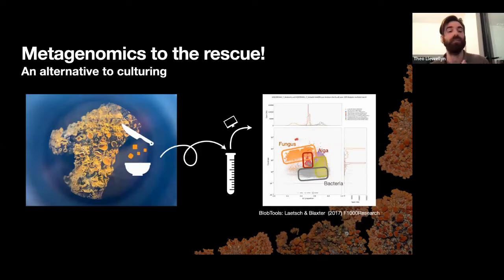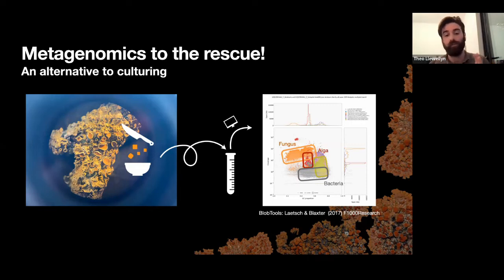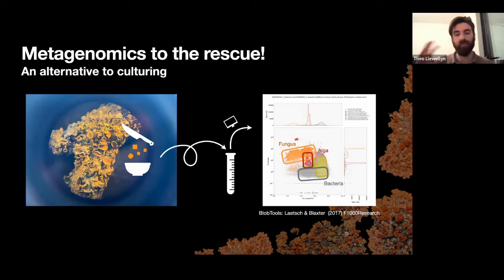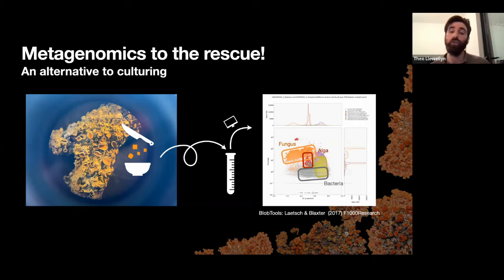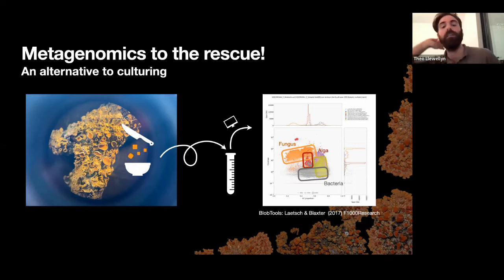That's where metagenomics comes in. This allows you to sequence basically everything — you scrape the whole lichen off, grind it up, do your DNA extraction, and then use bioinformatics to separate the different organisms. Without going deep into the bioinformatic pipeline, you can use characteristics of the DNA sequences themselves to separate genomes. One very useful character is the GC content — the proportion of guanines and cytosines to adenines and thymines. Different organisms tend to have different proportions of GC in their genomes.